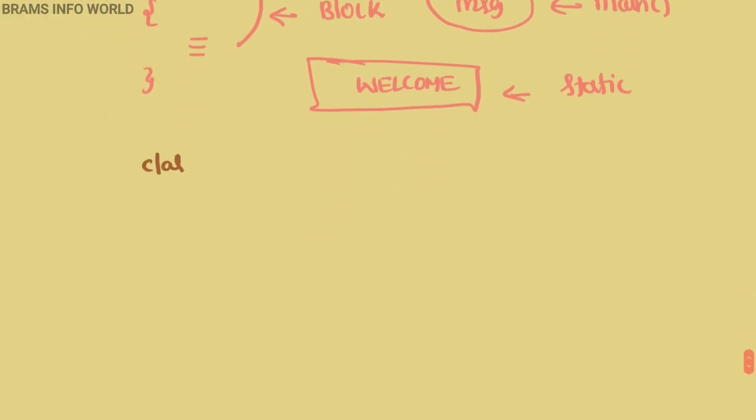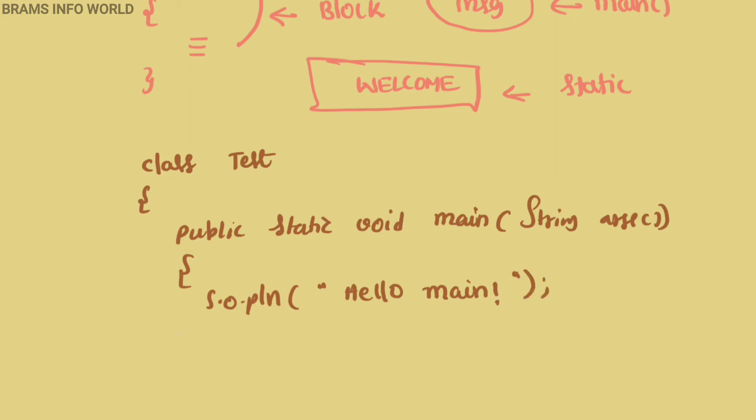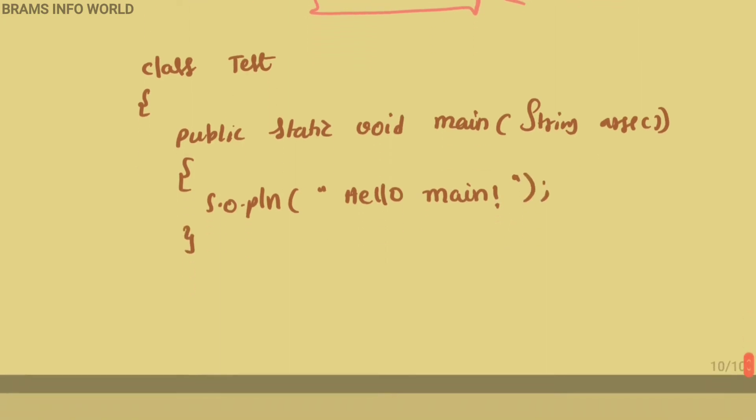If I want to write a static block, for example: class Test, public static void main String args, and system.out.println hello main. So this is my main.